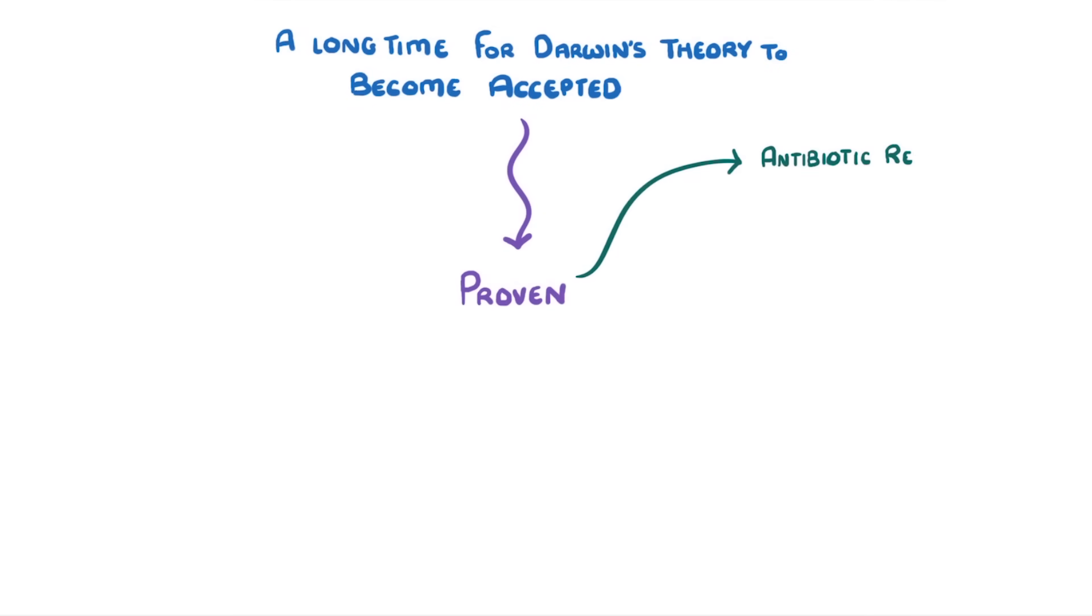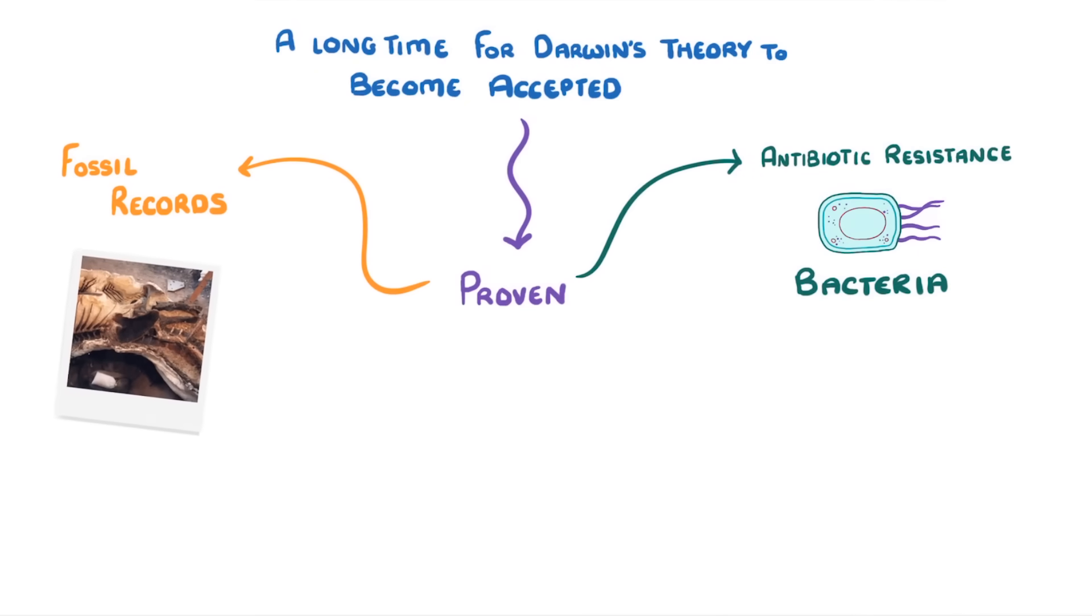Just like countless other important theories, it took a really long time for Darwin's theory to become properly accepted by the scientific community. But it's now been proven multiple times over from things such as the development of antibiotic resistance in bacteria, where we can literally see evolution taking place, or by looking at fossil records as we'll see in other videos.